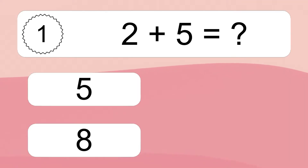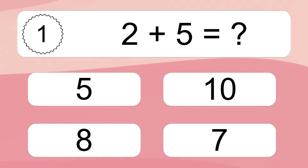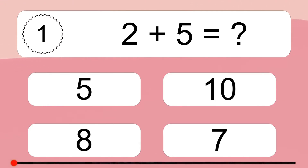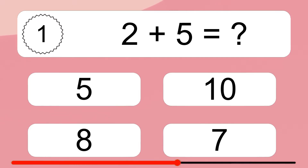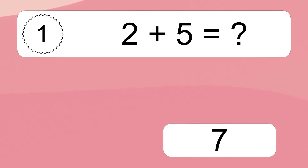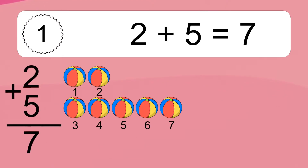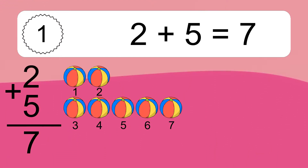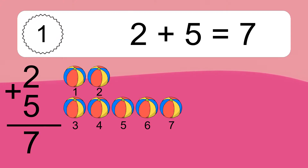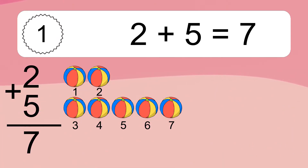2 plus 5 equals what? 2 plus 5 equals 7. Let's count it: 1, 2, 3, 4, 5, 6, 7.